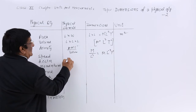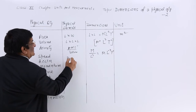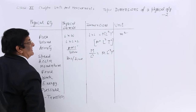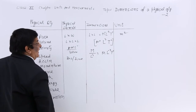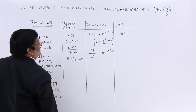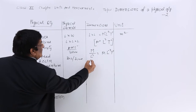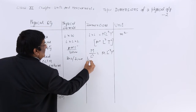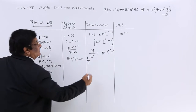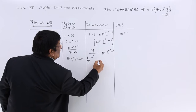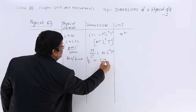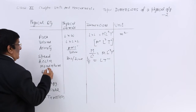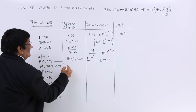Then speed. Speed is distance upon time. Distance is length and time is T, so speed has dimensions L T⁻¹. Then acceleration — speed upon time — which gives L T⁻².